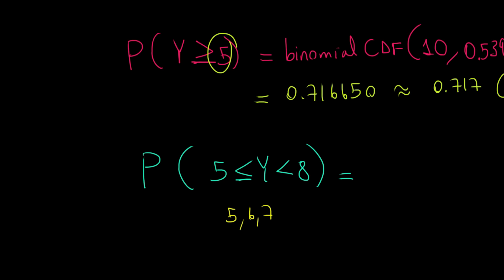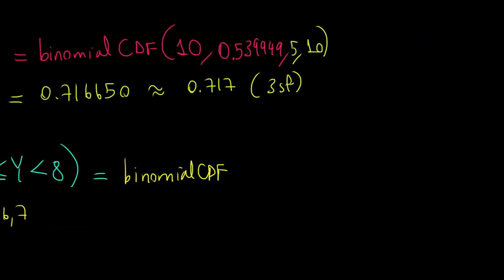I am not including the eight, which means in our calculator, we will go for the binomial CDF, and I use a very similar process with 10 as the number of trials, the 0.539949 as my probability. I'm literally taking it from here. My lower bound is five, but my upper bound is seven, not even eight, seven, because seven is the last value included. I work this out, and this would be 0.627788, which would be roughly 0.628 at three significant figures.